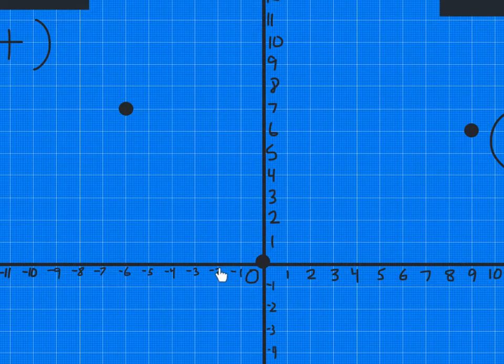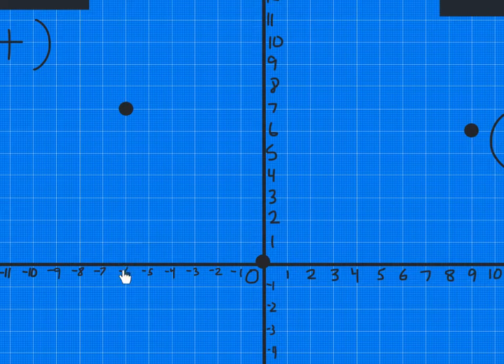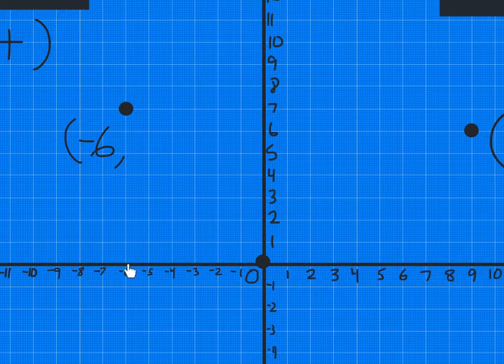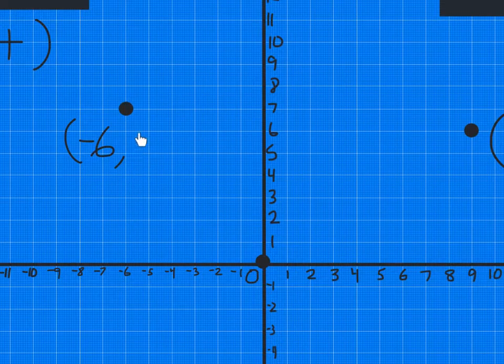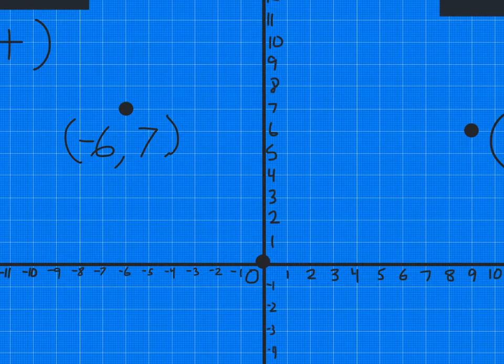We're going to go one, two, three, four, five, six spaces left until I get to that line. So my x-coordinate will be negative six. And then my y-coordinate will be up from there and that's seven up. So that is going to be positive seven. So the ordered pair for this point is negative six, seven.